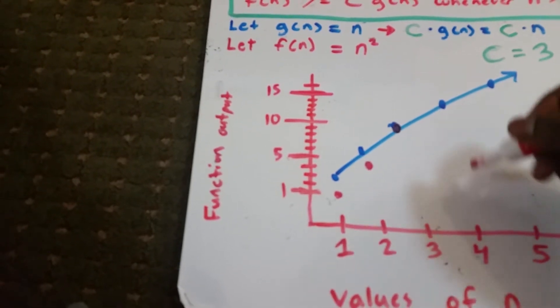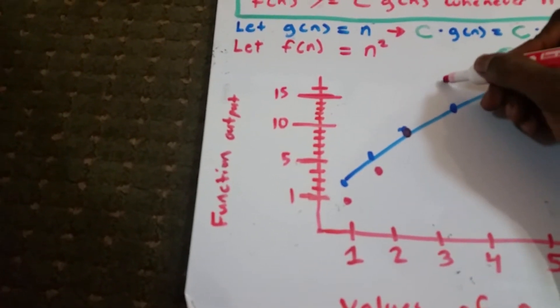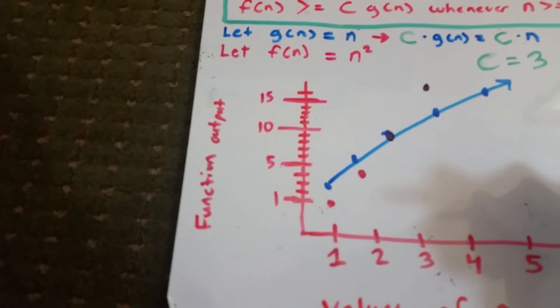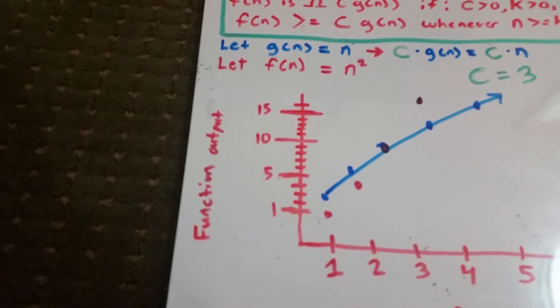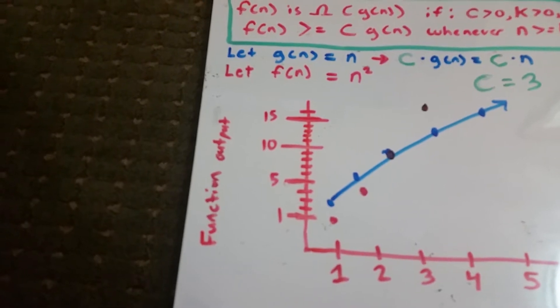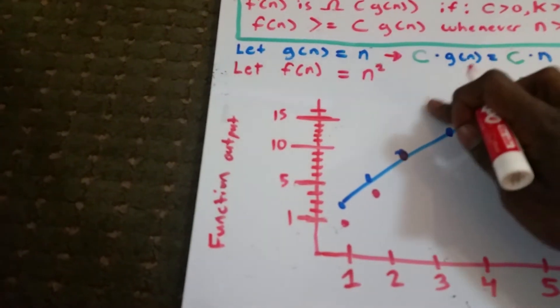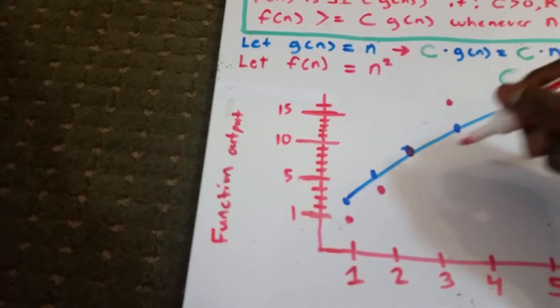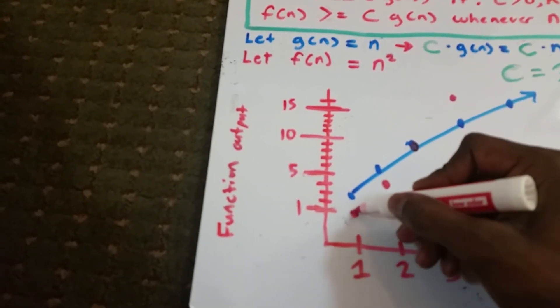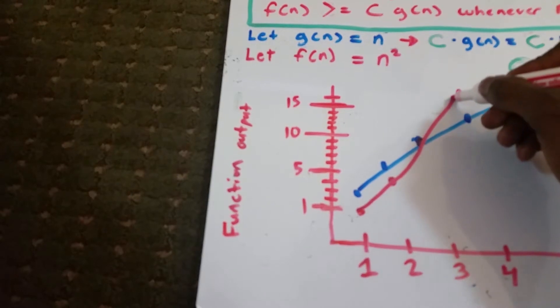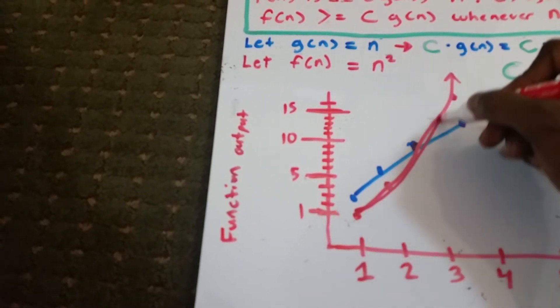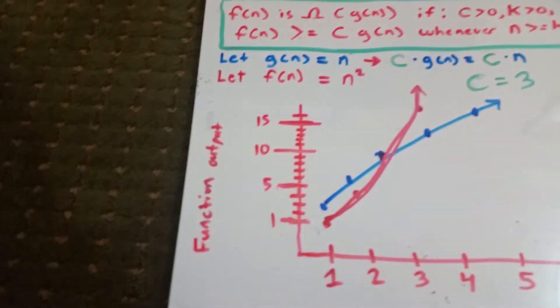And 4 squared is 16, so it's here. And 5 squared is not on the graph. Make that a red dot. Okay, and now let's go ahead and draw that curve. Wow, there we go, that's a little bit better.